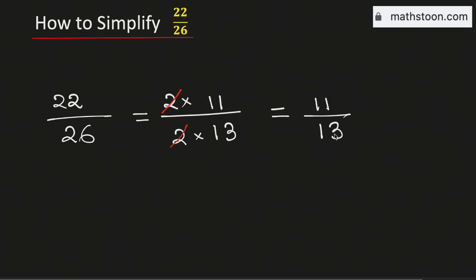As both the numbers are prime numbers, this fraction cannot be simplified further. Therefore 22 over 26 simplified is equal to 11 over 13, and this is our final answer.